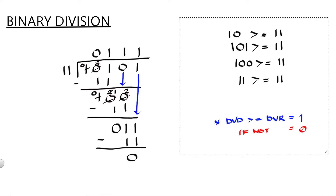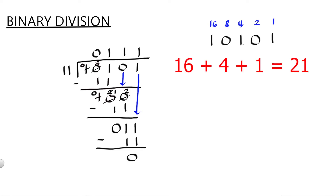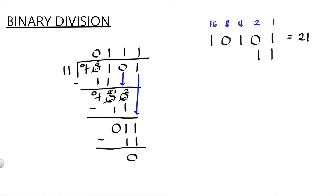We can verify our answer by converting the given and the quotient into decimal. For our dividend, we have 10101, and the bit positions are 1, 2, 4, 8, and 16. Then add up numbers with 1. So we have 16 plus 4 plus 1, which is equal to 21. For our divisor 11, we have 2 plus 1, which is equal to 3. And 21 divided by 3 is equal to 7. And our binary quotient 111 is equal to 4 plus 2 plus 1, which is equal to 7. So we can say our answer is correct.